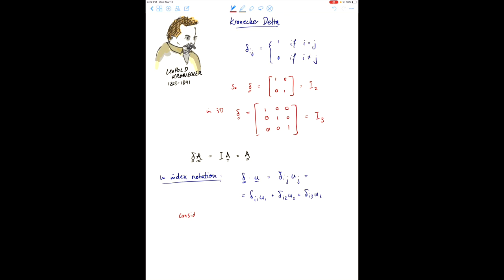So, for example, consider the second element here, say, i equals 2. In that case, delta 2j uj is simply delta 2, 1, u1 plus delta 2, 2, u2 plus delta 2, 3, u3.